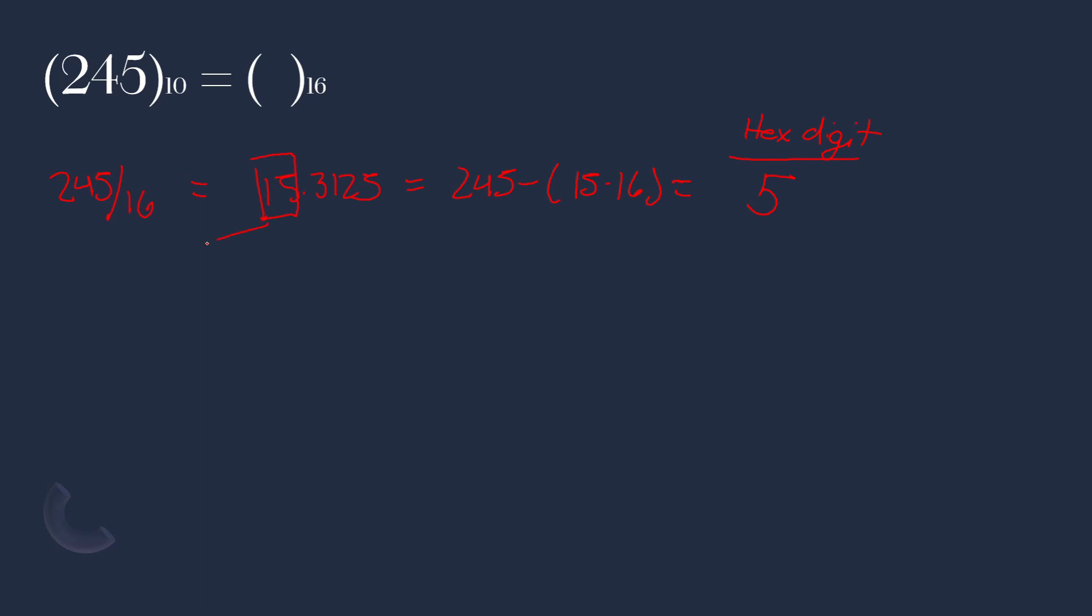So what we're going to do, we're going to take this 15, divide by 16. 16 doesn't go into 15 whatsoever. So it's a big fat 0. We are left with 15. And that corresponds on the graph to value F. Read it upwards. So our value for 245 base 10 is F5 base 16.